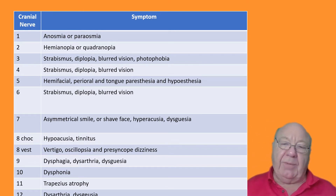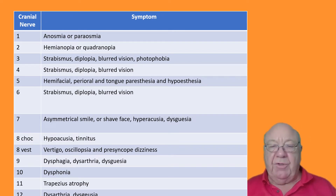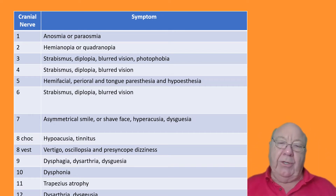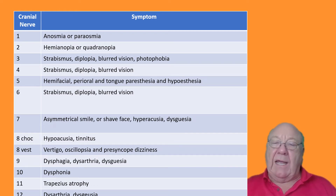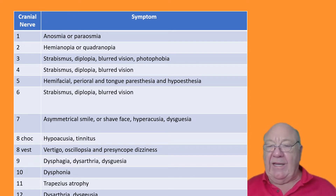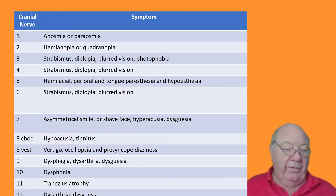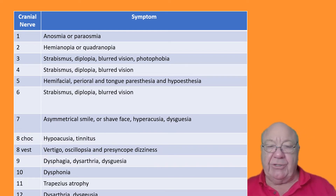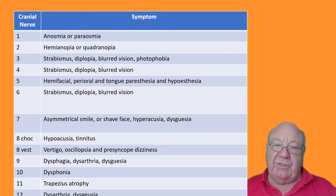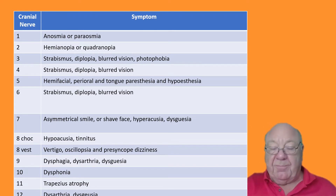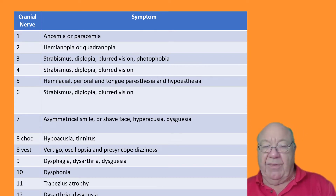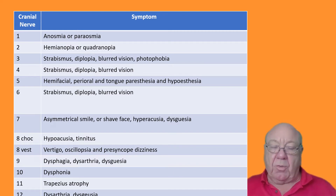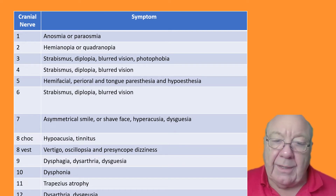Hemianopia or quadranopia: it's amazing, but you can lose half of your visual field — provided it's the lateral field, not the medial field — and not know about it. That's because to see to the left, you would turn your head, so the blind spot moves with you. The patient may not be aware of this. Sometimes you get a denervation sensation in the form of scintillations — flashing lights existing in the blind spot. If the patient reports that descriptor, it's probably hemianopia or quadranopia, and you can test them.